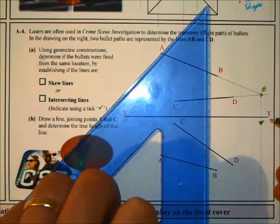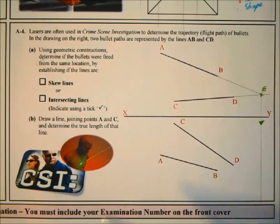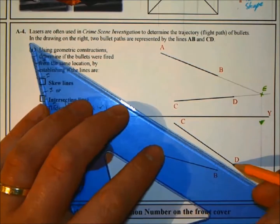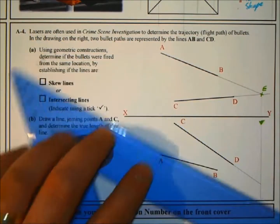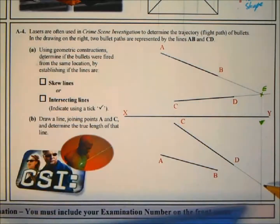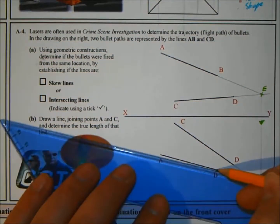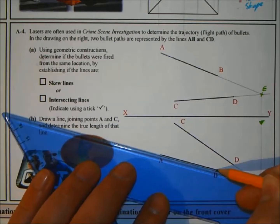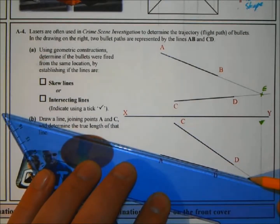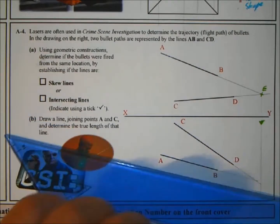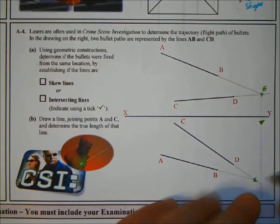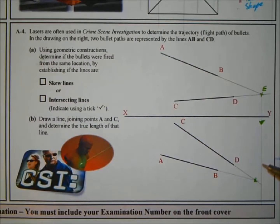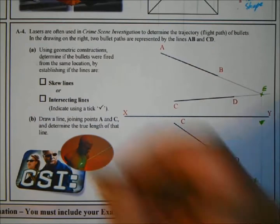And if we repeat the process in plan, and if they end up intersecting at the same point, then they're definitely fired from the same location. So AB should join up over here on the E line, but they are not. They are joining up here. Therefore they are not intersecting. They will not intersect and they will also not fire from the same point, so therefore there are definitely skew lines. So you can put your tick in the box.